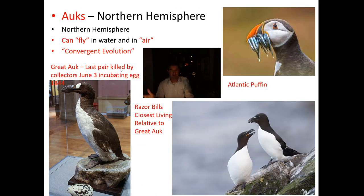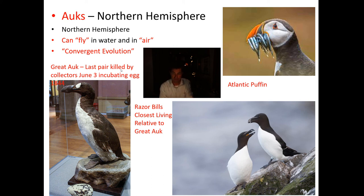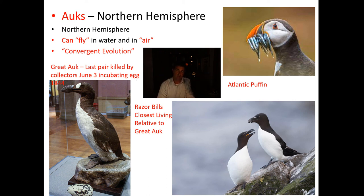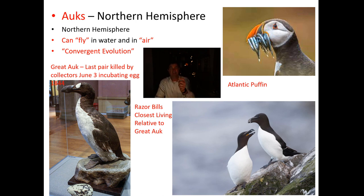An auk is a group of birds found in the Northern Hemisphere that can fly in water and also in the air. Similar examples include the Atlantic puffin and the razorbill, which is the closest living relative to the great auk. The last pair of great auks was killed by collectors in June of 1844 — there was a pair actually incubating an egg when these people went over and killed them. Penguins and auks are an excellent example of convergent evolution, because two groups of birds unrelated to one another have very similar colors and body shapes. The body plan of that evolution is favored twice because it works well in these really cold environments, but auks and penguins are not very closely related.